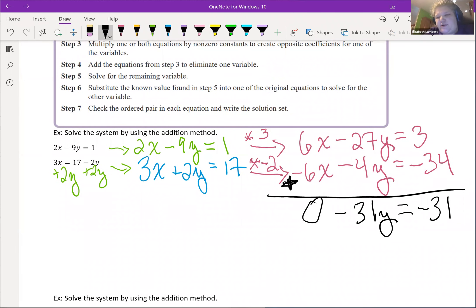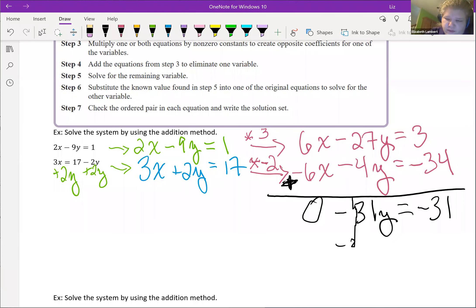And look at that, negative 31, negative 31. Yes, so just because the numbers start looking ugly keep going. So 0 minus 31y, the 0 doesn't do anything here. 0 minus 31y is negative 31y and then we're just going to divide.